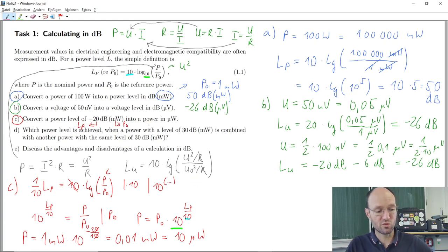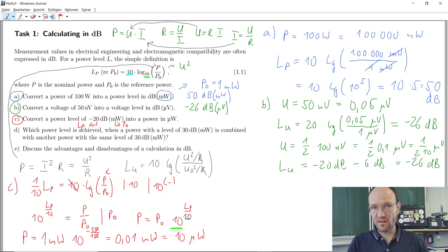And you could also calculate it in a way to say, okay, minus 20, what was minus 20 converted into linear units for powers? 10 to the power of minus 2, so 1 over 100. Minus 20 dB means dividing by 100. So we have 1 milliwatt, and divide this milliwatt by 100. So we end up with 0.01 milliwatt, and this is then 10 microwatt.